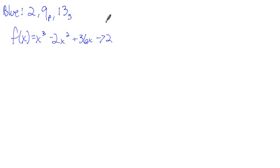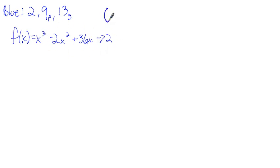They give us this polynomial and say to write it as a product of linear factors. A product means multiplied together — that's what factors are. So we're going to factor this all the way down to linear factors, which look like x minus h, as opposed to x squared or x to the third, or anything like that.